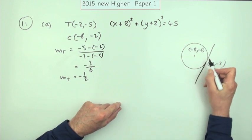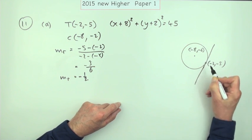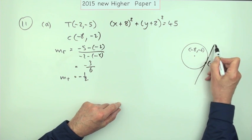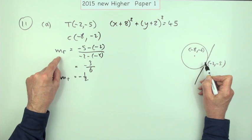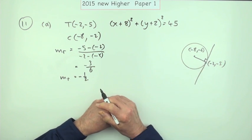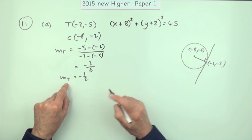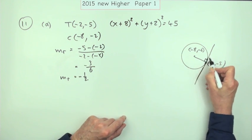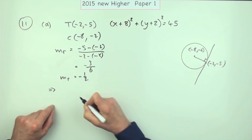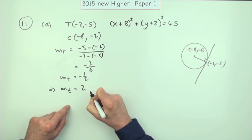To find the equation of the tangent line, you need a point on it — we've got the point negative 2, negative 5 — and you need its gradient, which you get from the gradient of the radius. The radius meets the tangent at right angles, which means knowing the gradient of the radius, the gradient of the tangent will be the perpendicular one. So the gradient of the tangent will be 2.